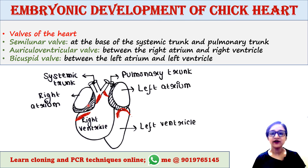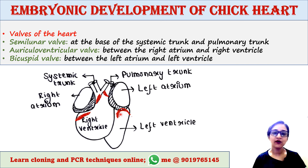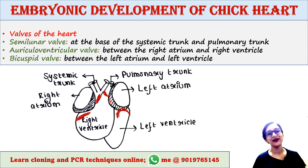The atrioventricular valve appears between the right atrium and right ventricle, preventing backflow of blood from the right ventricle to the right atrium. There is also a bicuspid valve, which prevents backflow of blood from the left ventricle into the left atrium. This concludes the embryonic development of chick heart.